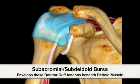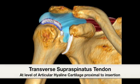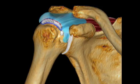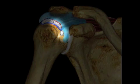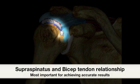Enveloping these lateral rotator cuff structures will be the subacromial subdeltoid bursa. This illustration shows a cross-section of the supraspinatus proximal to its insertion of the greater tuberosity. Our primary focus of this video will be the relationship of the supraspinatus tendon with the bicep tendon at its intracapsular segment.